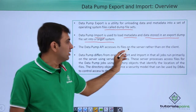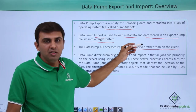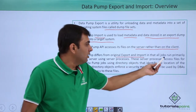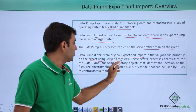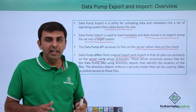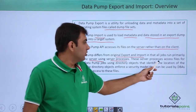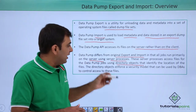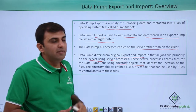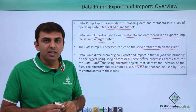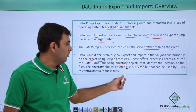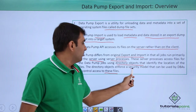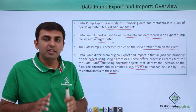A Data Pump API accesses its files on the server rather than on the client — everything is available on the server, not on the client. Data Pump differs from the original export and import in that all jobs run on the primary server using server processes. The server process accesses files for the Data Pump job using a directory object. Whenever you use Data Pump export and import, you need to create an Oracle database directory object first. It also enforces a security model that the DBA can use to control access to files — only users granted access to the directory can access those files.